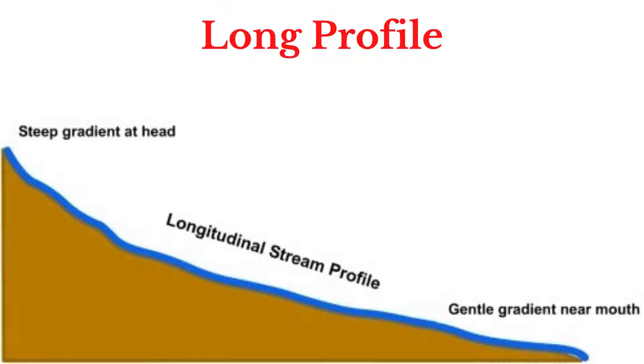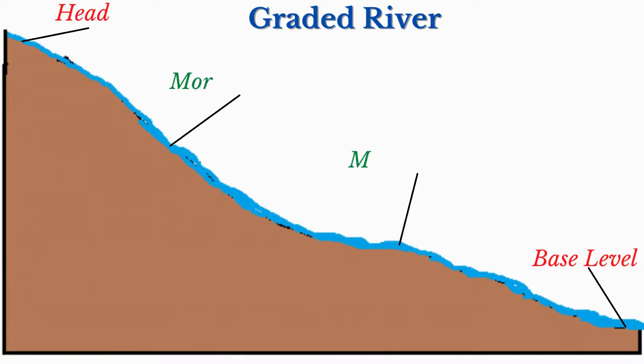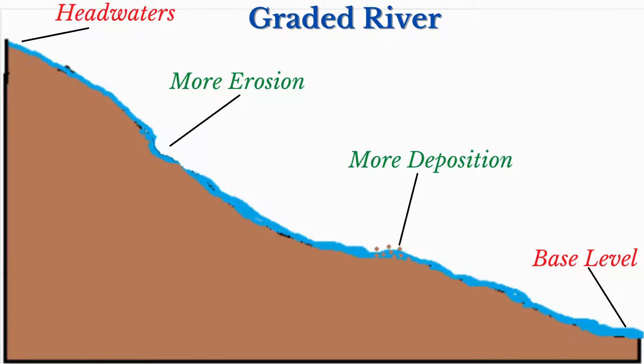The river is experiencing equilibrium between the rate of erosion and the rate of deposition. A graded river is the most efficient in terms of its ability to transport water and sediments along its course. Though some rivers may come close to becoming graded in reality, the concept is mostly theoretical as there are constant changes in the environment which hinders this from actually happening.